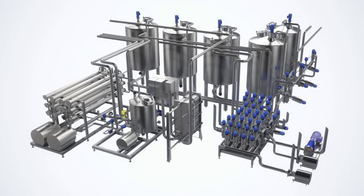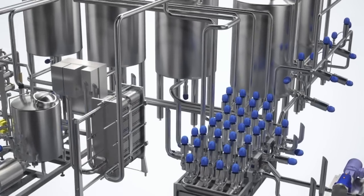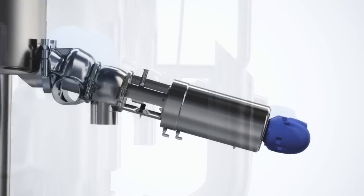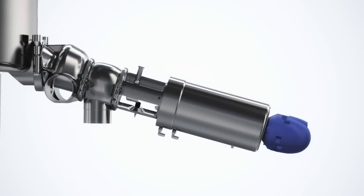The Alfa Laval unique mixed-proof horizontal tank valve is specially designed for horizontal mounting on the side of a tank or as a space-saving alternative at the bottom of a cone-formed tank.